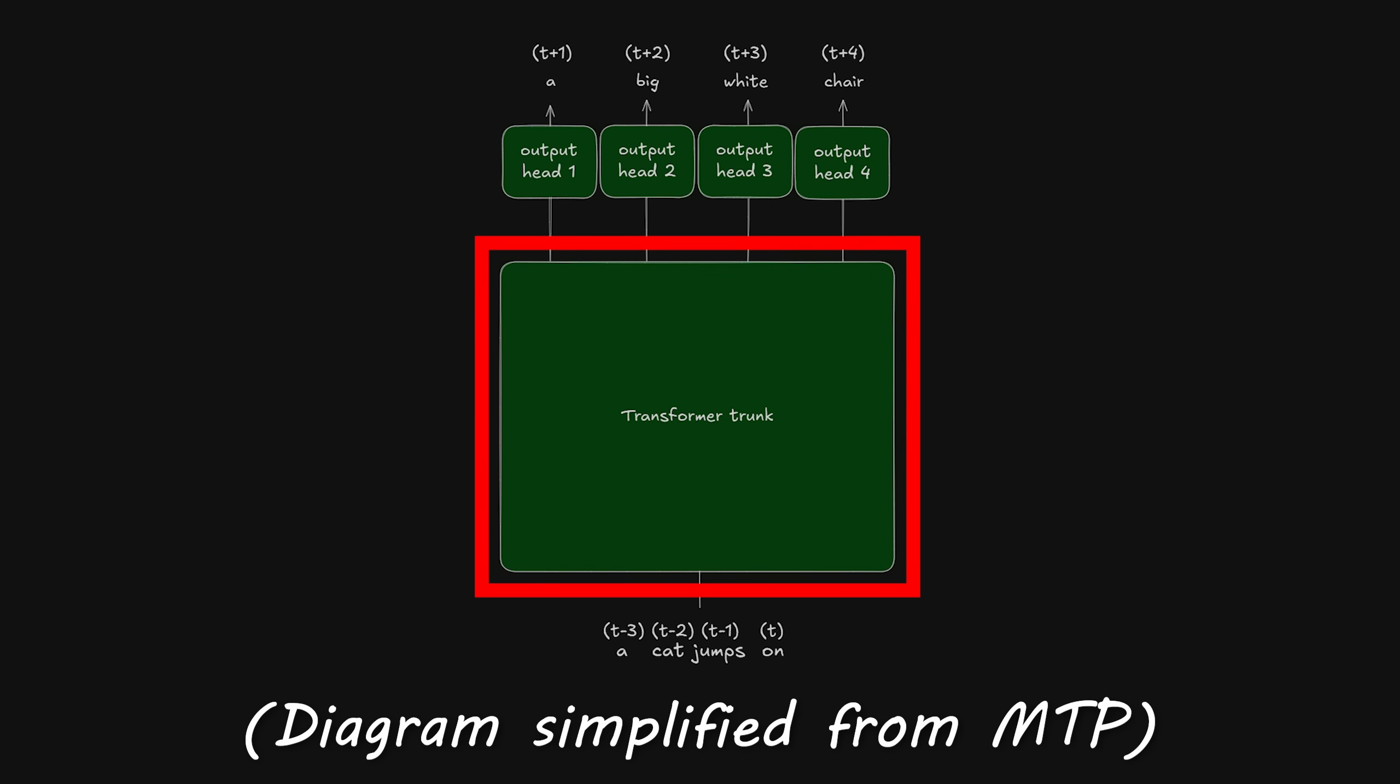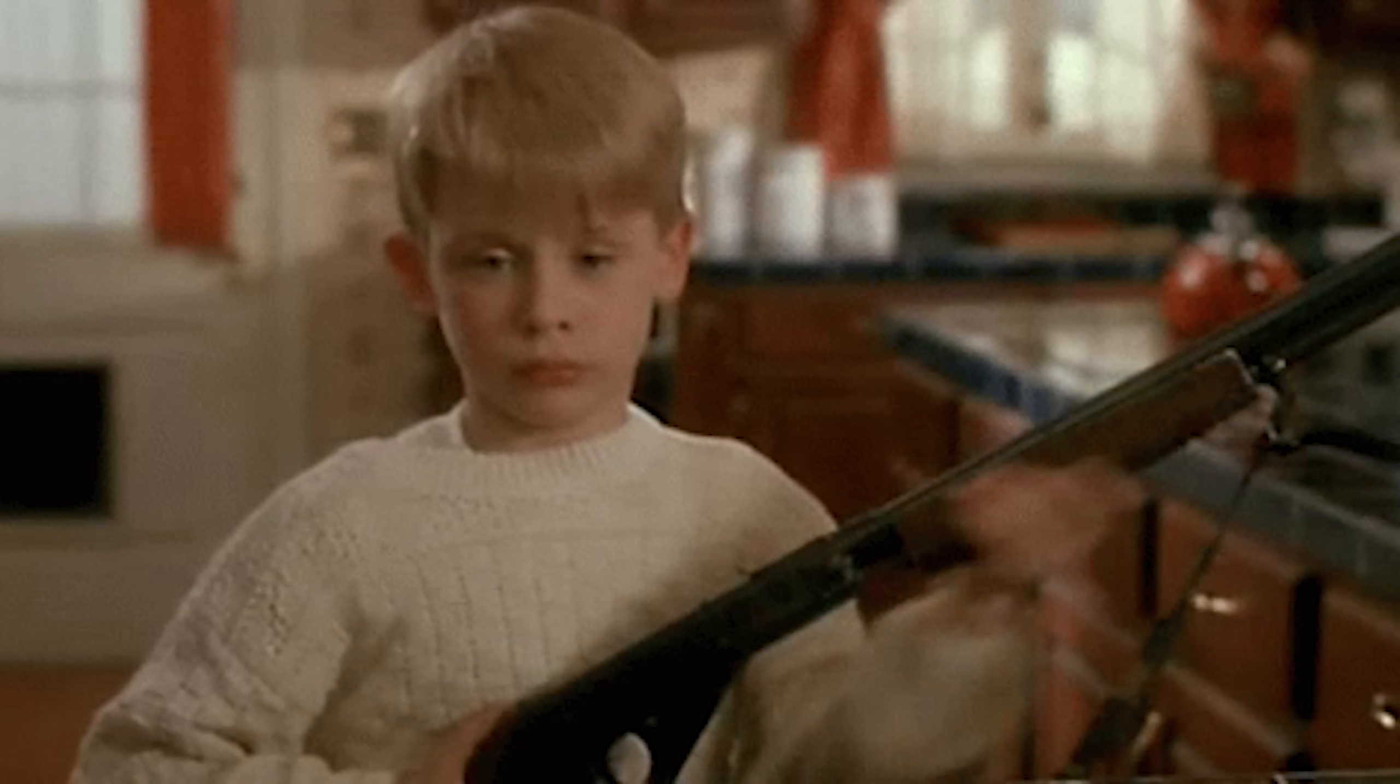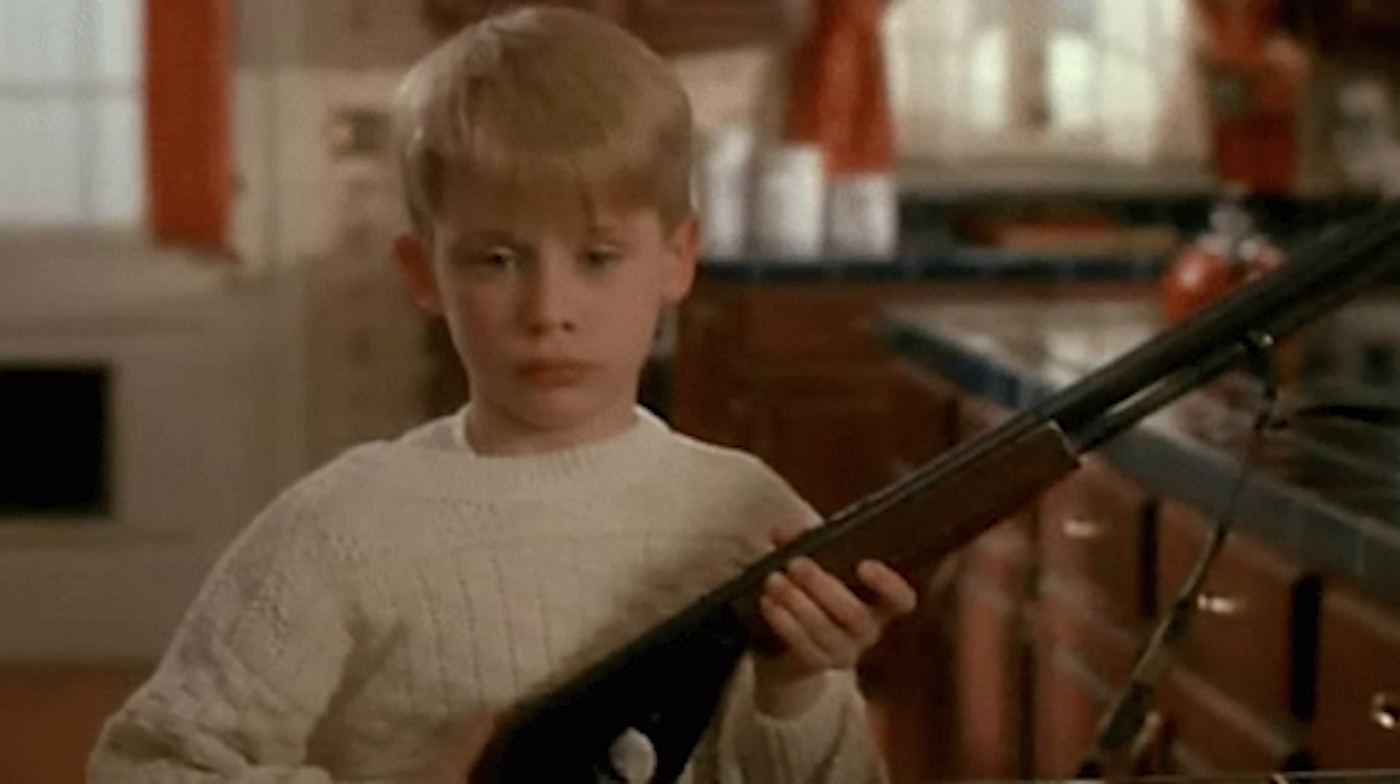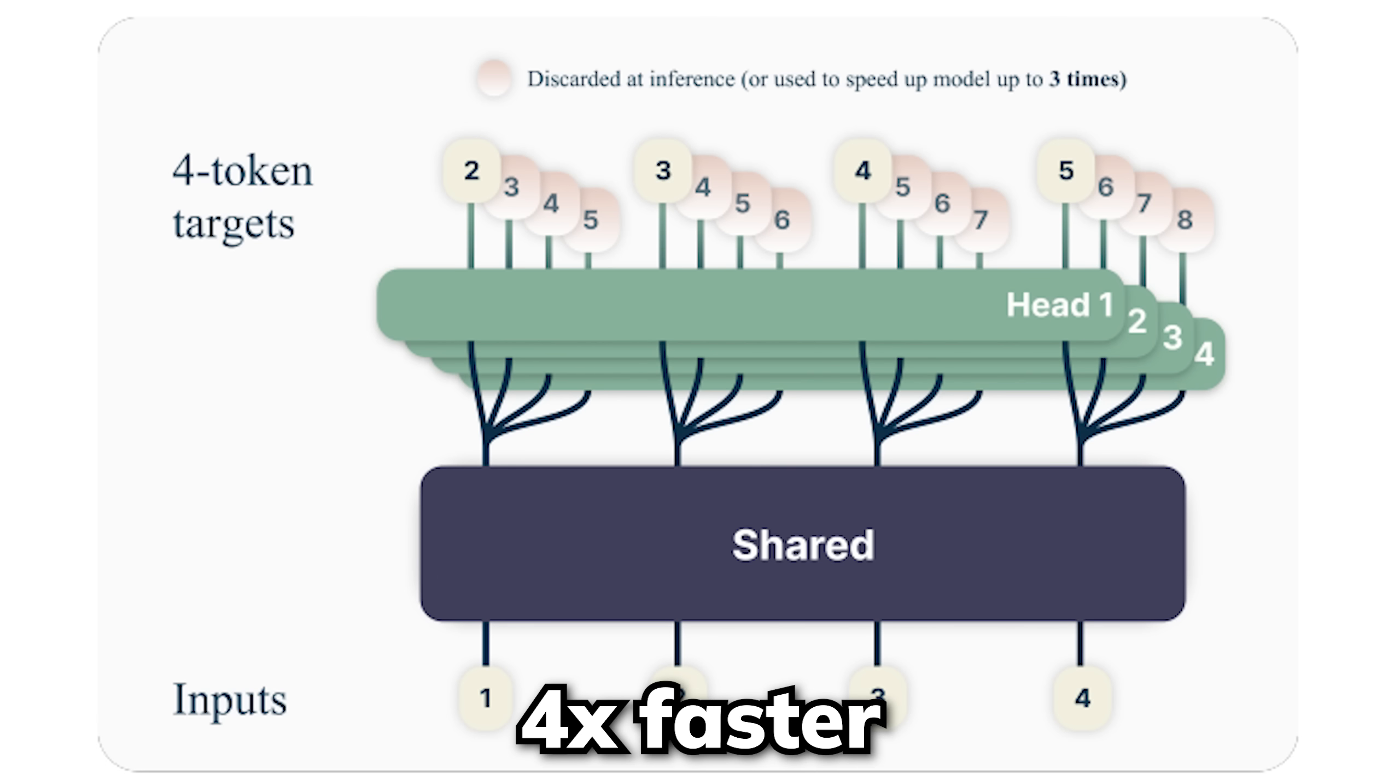So the trunk is basically a shared backbone, where all these heads take the exact same hidden state from the trunk and simultaneously predict the new tokens at their future corresponding positions. So one pass of the model basically shotguns four tokens at once, capable of speeding the process up by four times on paper.